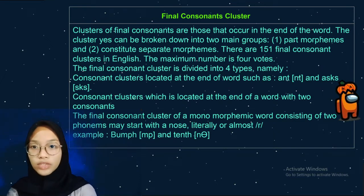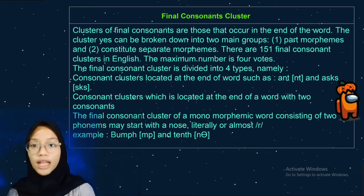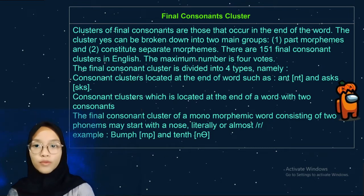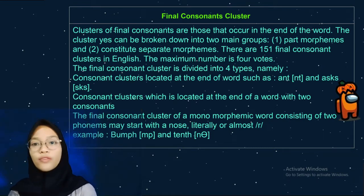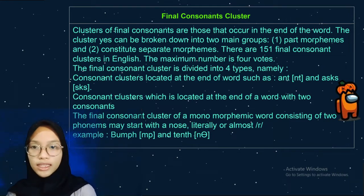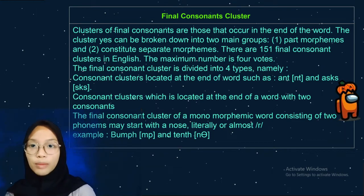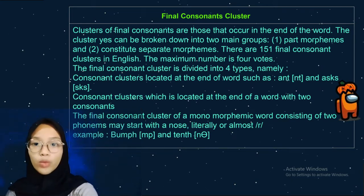The final consonant clusters of monomorphemic words consisting of two phonemes may start with a nasal. The third type: consonant clusters at the end of the word that begin with a fricative or stop. There are five consonants used in the final cluster starting with a fricative or stop: S, F, B, C, and K. For example: depth (B with Z) and collapse (B with S).